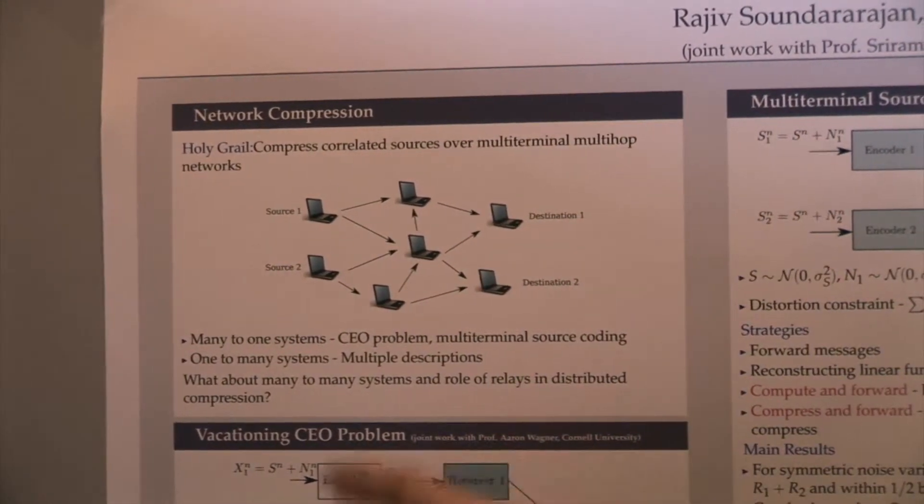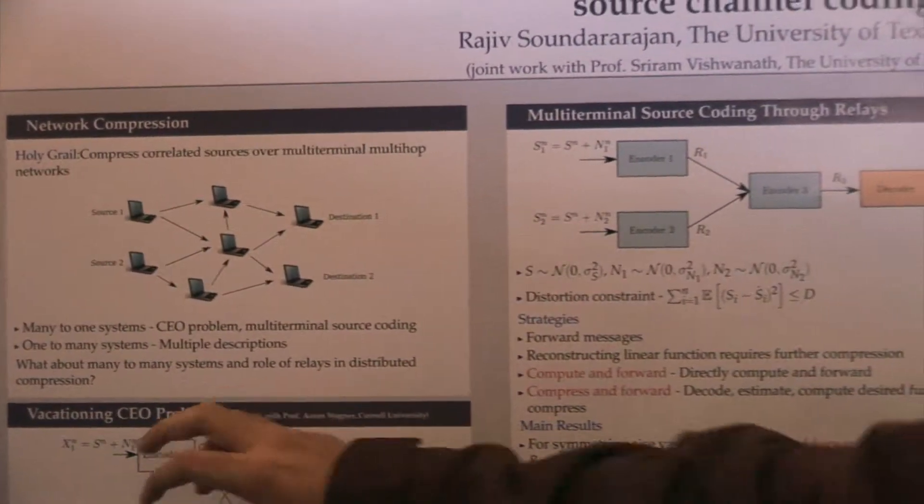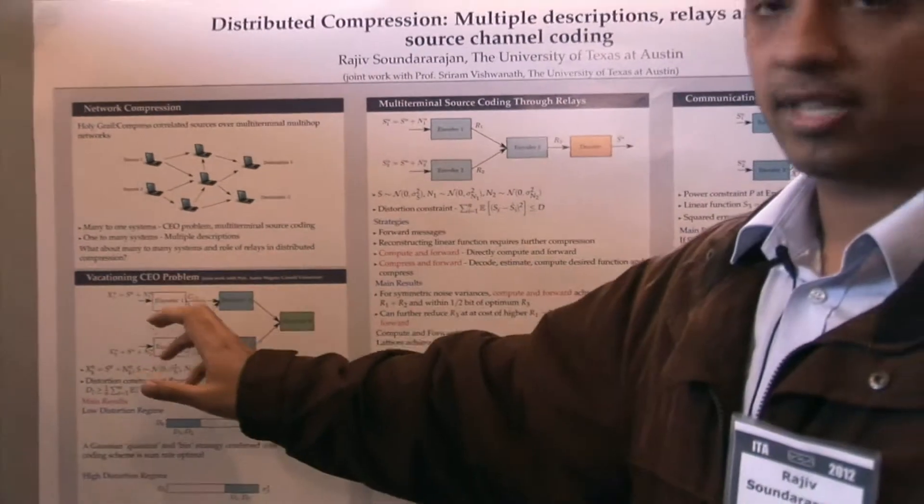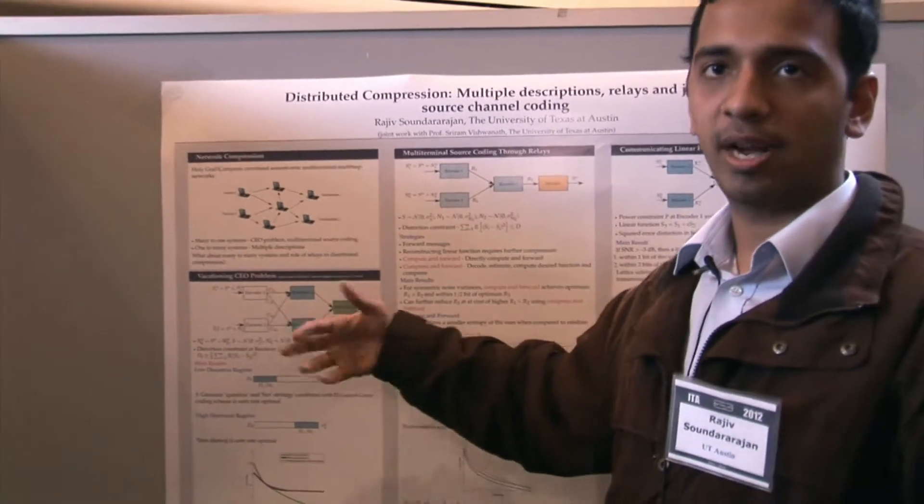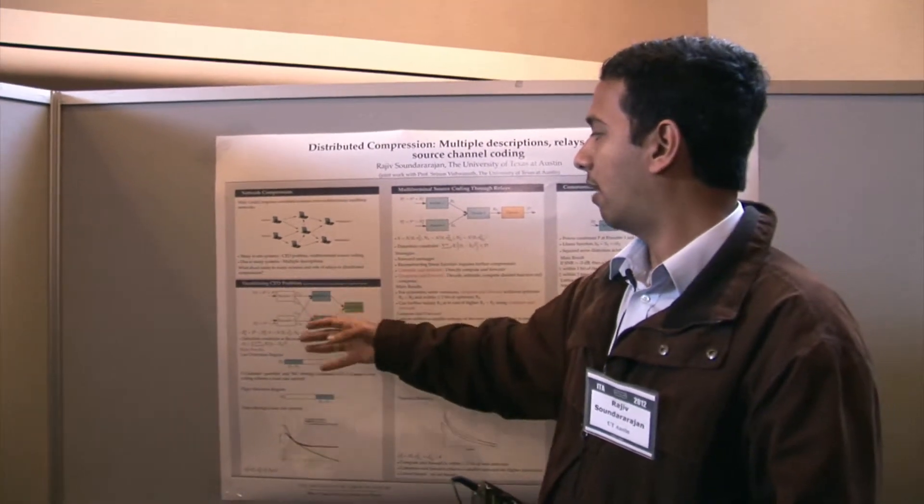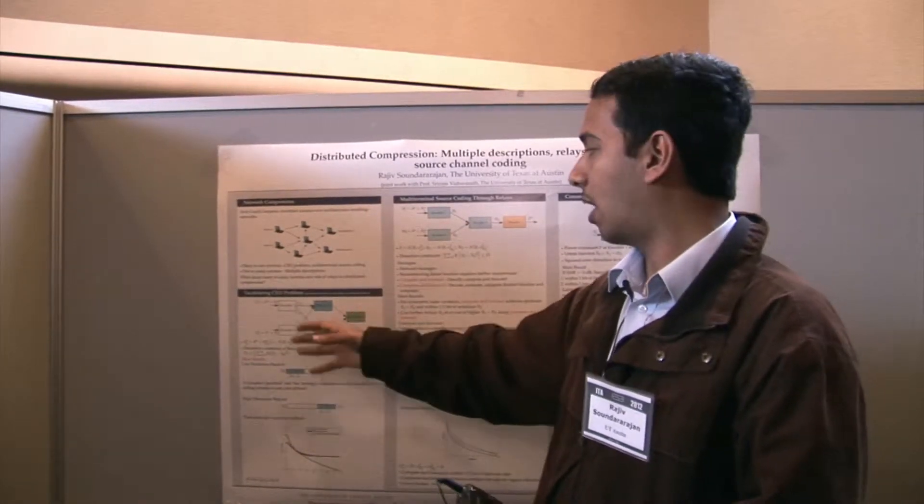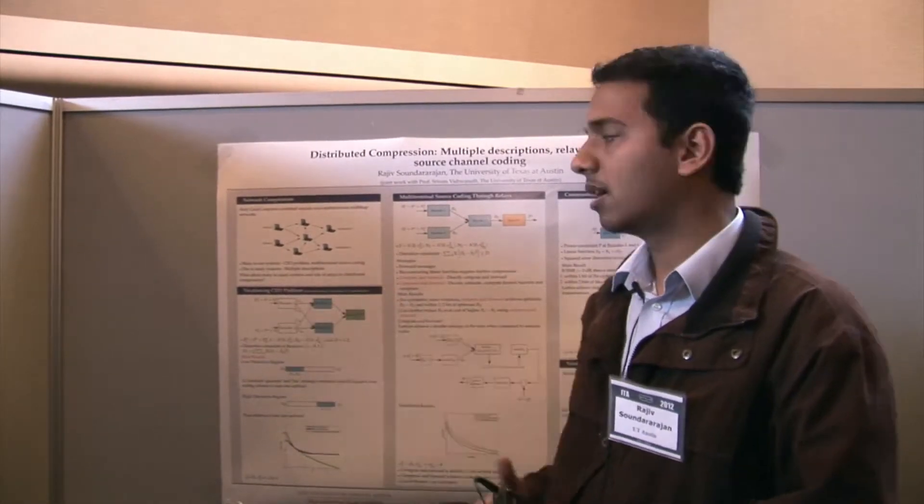Let's consider the vacationing CEO problem, which is a multi-terminal multiple description problem. Note that there are two sources, and each source generates multiple descriptions. The objective is to find out what is the smallest rate at which we need to generate these descriptions.